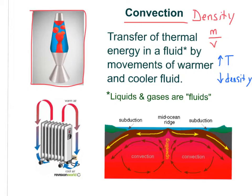This cycle is called a convection current. Convection currents transfer thermal energy from warmer to cooler parts of a fluid — remember, thermal energy always transfers from warmer to cooler, never the reverse. It's also important to note that in a convection current, both conduction and convection transfer thermal energy, since particles are still bumping into each other.